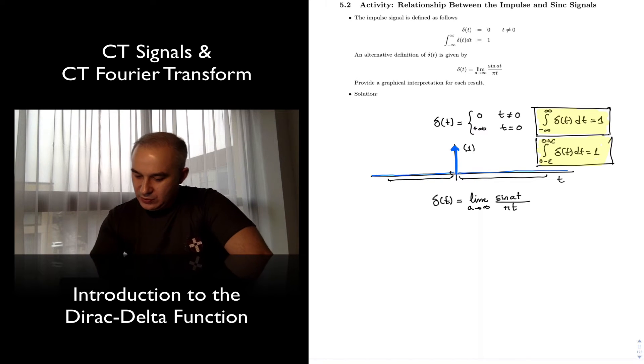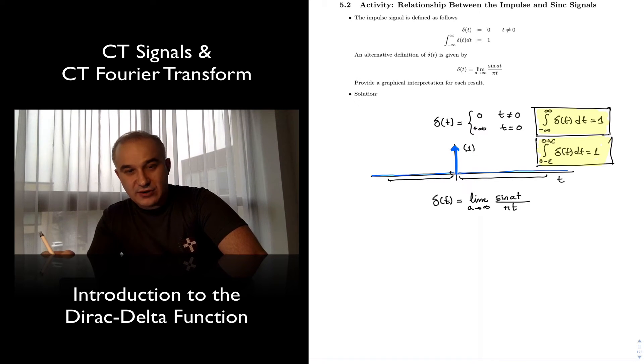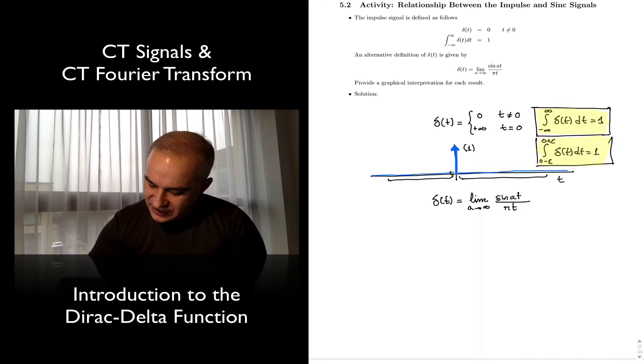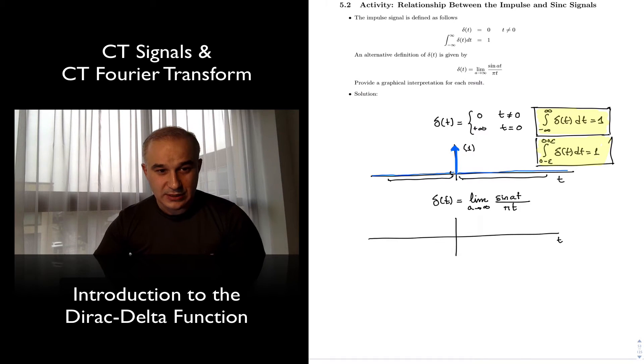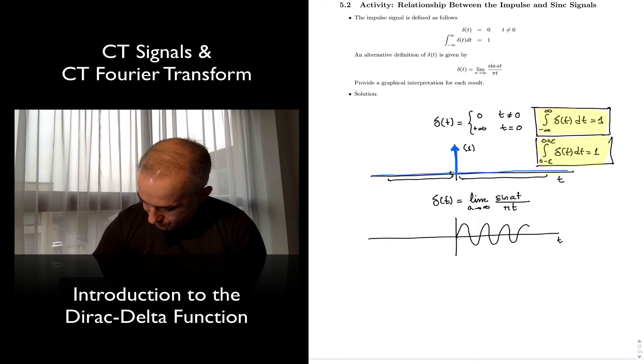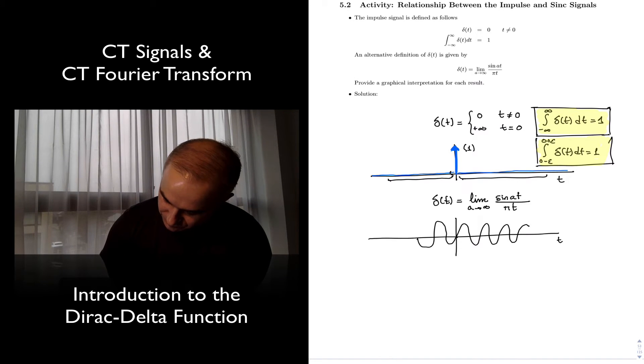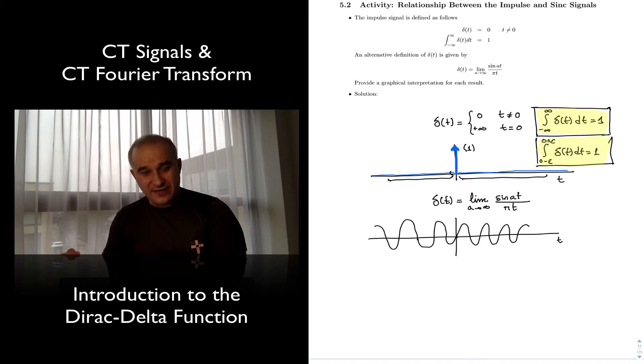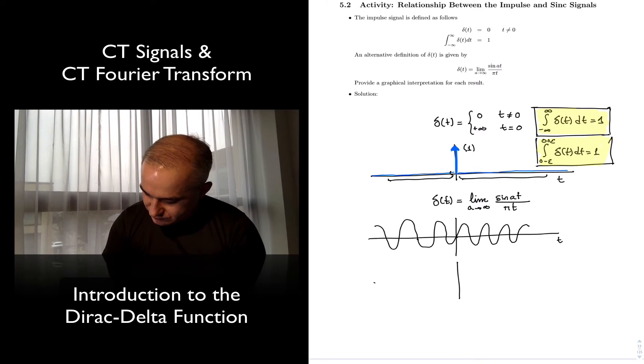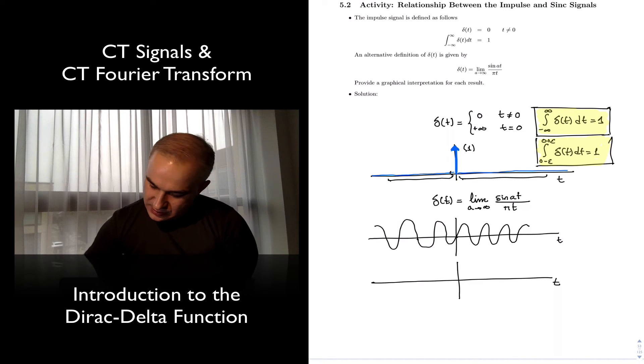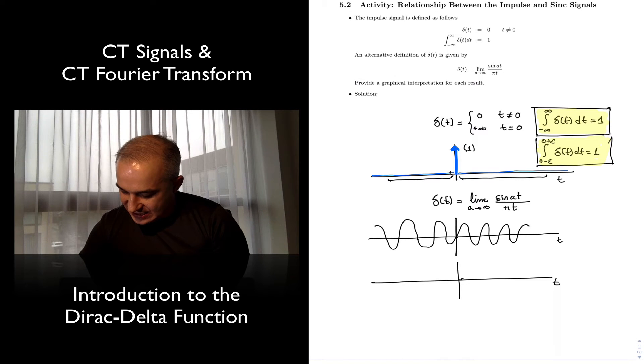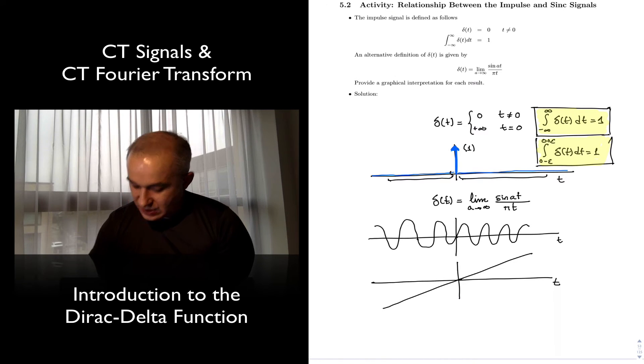So if we were to look at this function and compute the integral, this is a function that the integral, the area is 1, and that it behaves like that. Think in terms of graphical interpretation, we can think that the numerator here is a sine, and the denominator as a function of t, this is just a line with the slope pi.